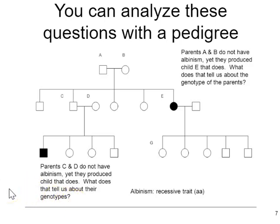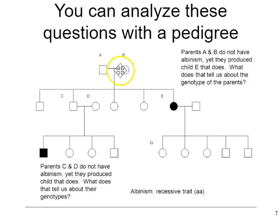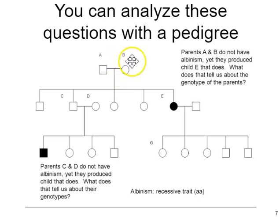Often we analyze these human genetics questions with pedigree analysis, because you can't do genetic experiments with humans. Instead, you get the genetic or health history of a family to figure out the possible genotypes of parents, their parents, and their offspring. This is a typical human pedigree setup. Squares indicate males, circles indicate females. Horizontal lines between them indicate a mating. These are the offspring produced by parent A and parent B: a boy, a boy, a girl, a girl, and another girl.